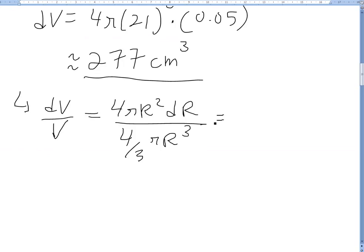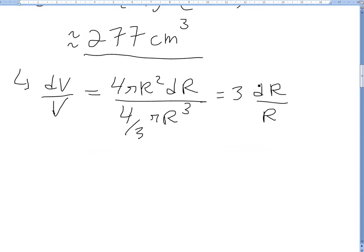So we'll be left with now, this 3 will go on top, 3 times it by dR over R. So it's going to be 3 times the basically the relative error in the radius.